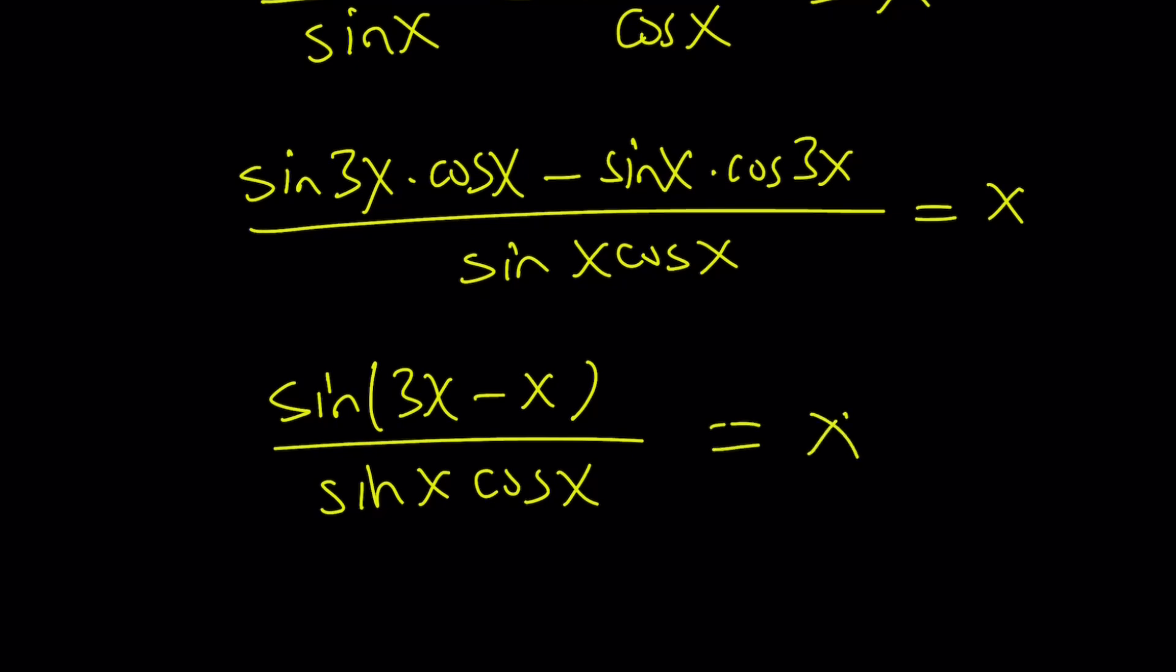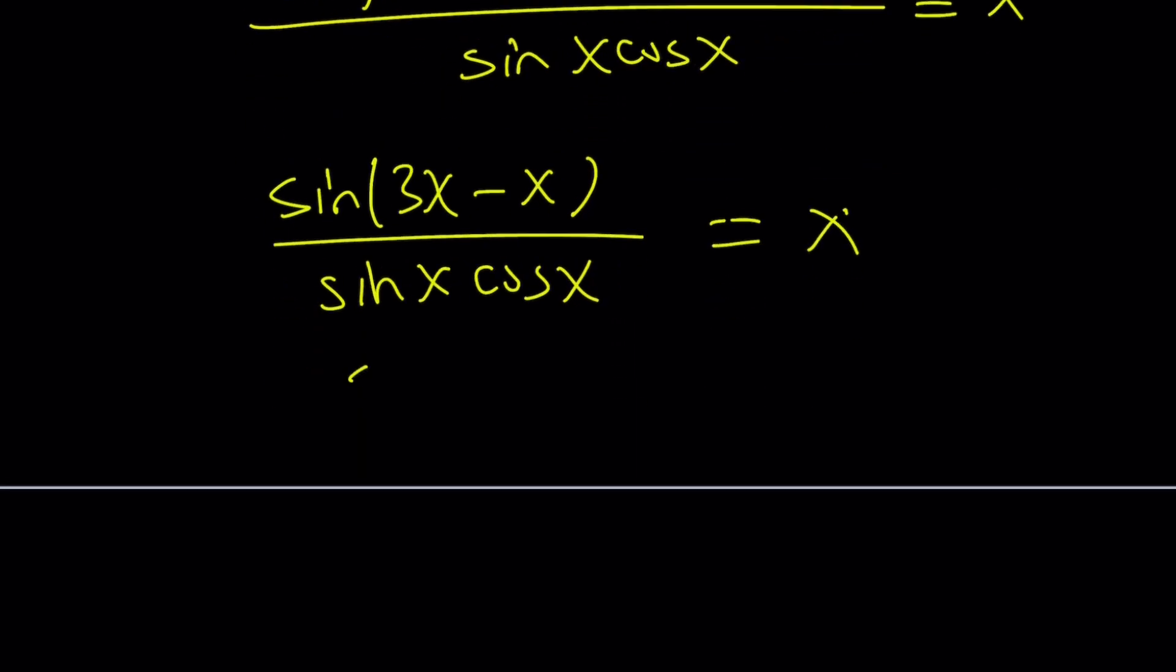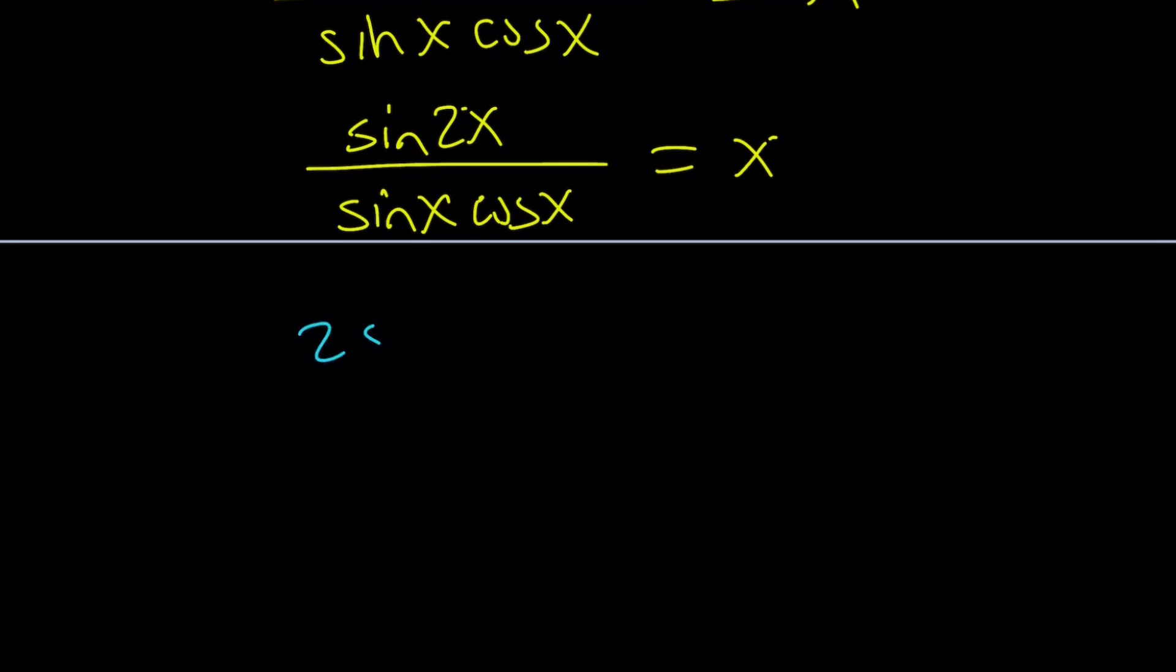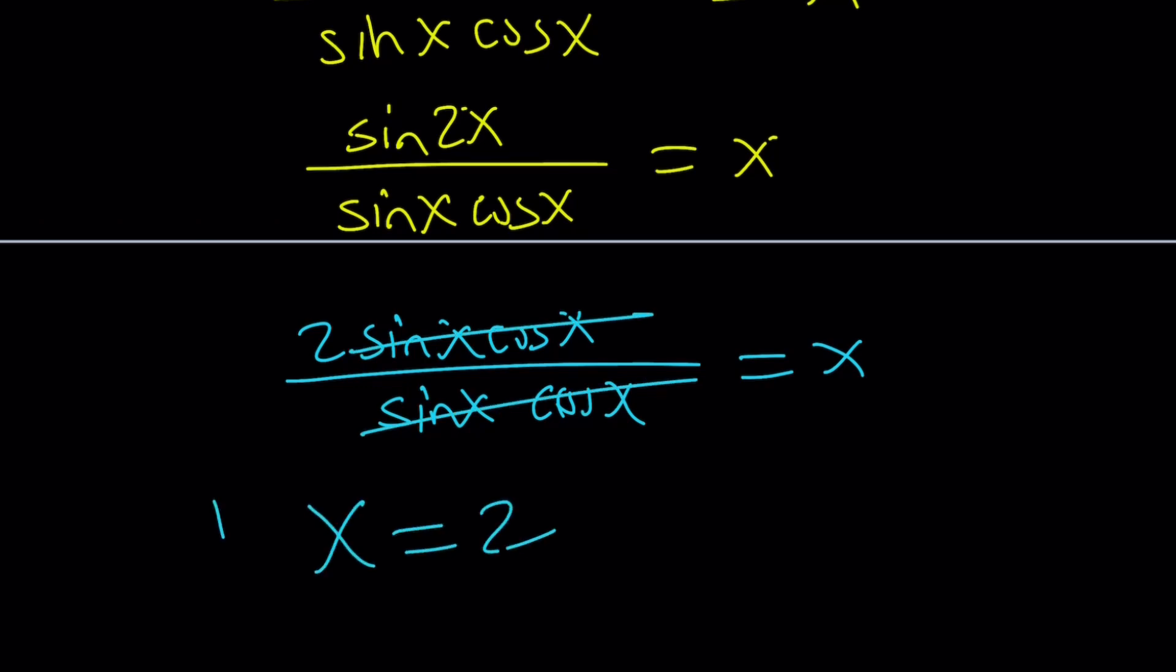This still looks pretty non-standard, but take a look. The top is sin(2x), and the bottom is sin(x)cos(x), and that equals x. Do you see what I see? If you do, then let's proceed. Sin(2x) is a double-angle formula, and it's equivalent to 2sin(x)cos(x). And the bottom is sin(x)cos(x). And guess what? If cos(x) and sin(x) are not 0, they cancel out, leaving us with x = 2 as before.